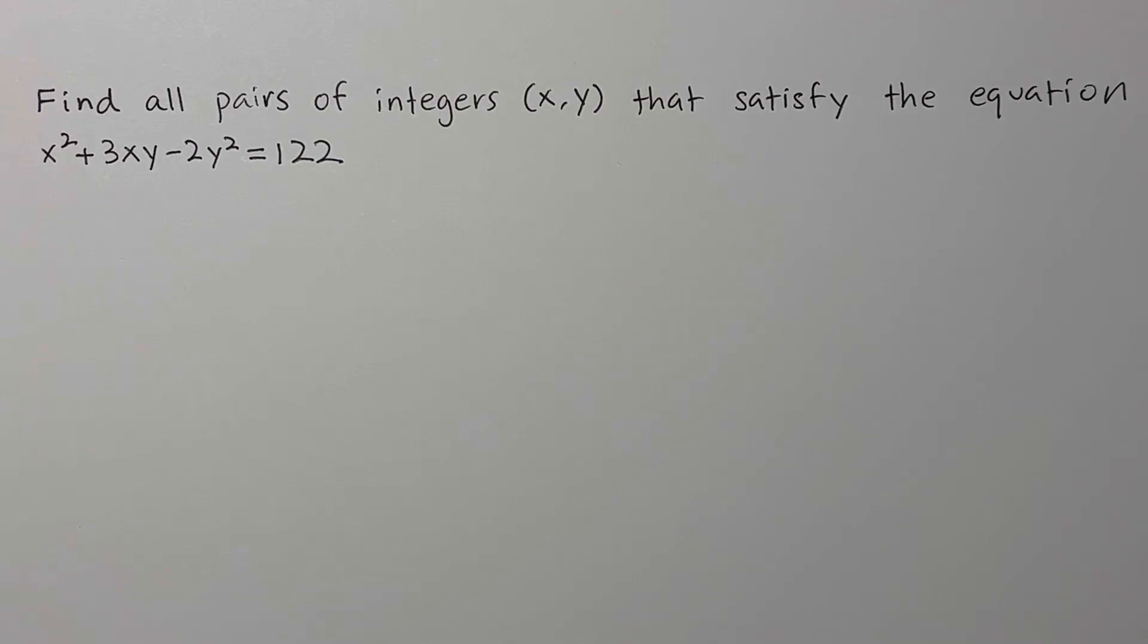In this problem, we want to find all pairs of integers x, y that satisfy the equation x² + 3xy - 2y² = 122.